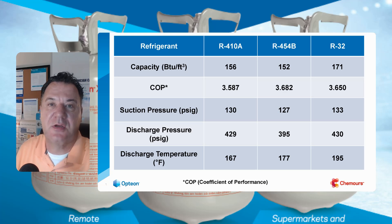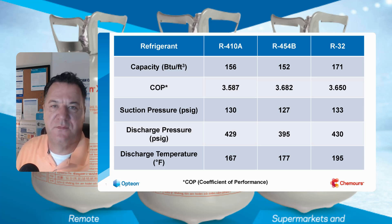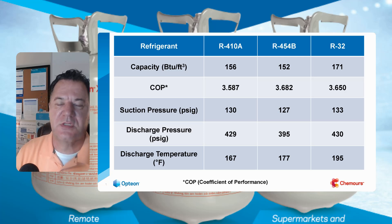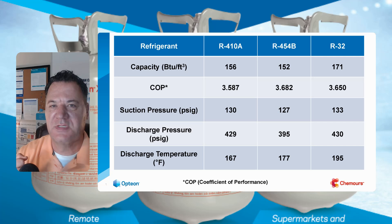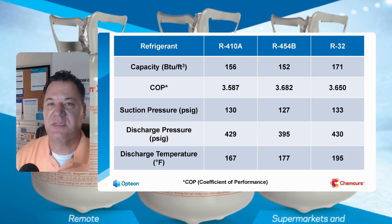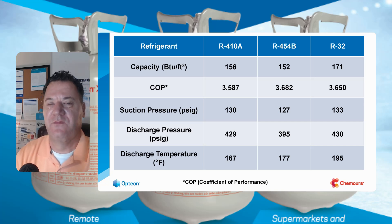Let's look at our discharge temperatures. On the 410A, if you're seeing 167 degrees Fahrenheit six inches out from the compressor, you're going to be right around 177 on the 454B and then 195 on the R32. R32 is going to run a little warmer because we removed that R125 from 410A. R125 did a couple of major things: it made it a fire deterrent or A1 classification, and it also kept that discharge line cool. So when we remove that, R454B and R32 are going to run a little bit warmer.